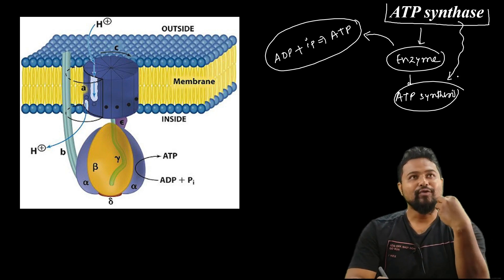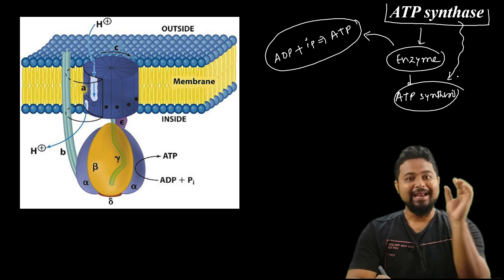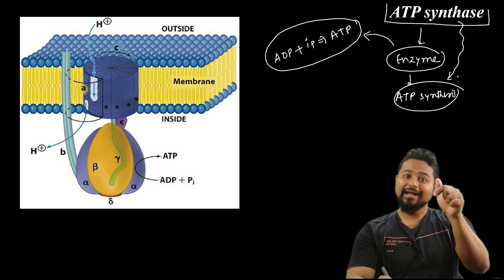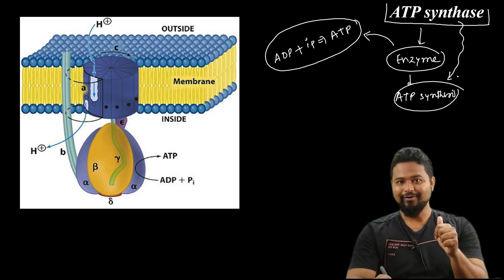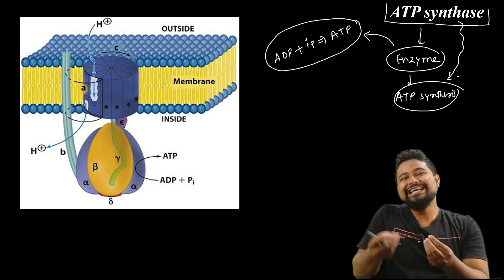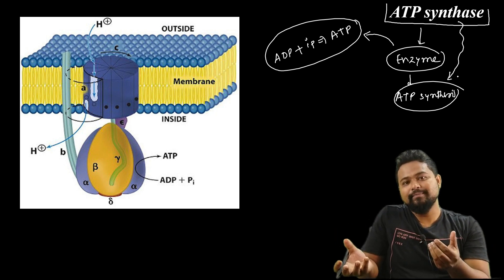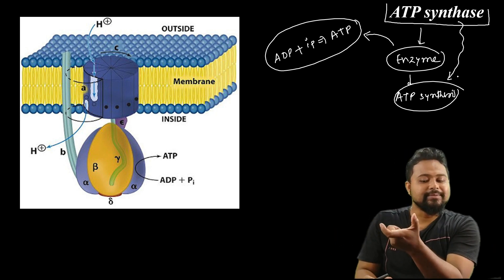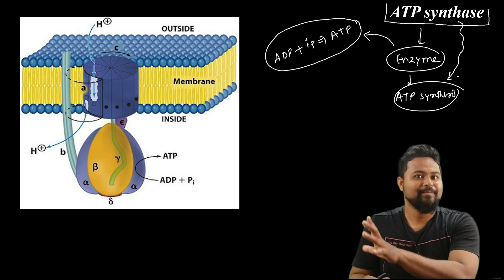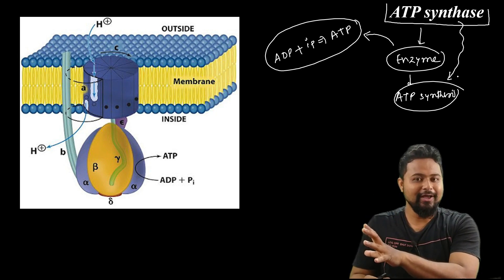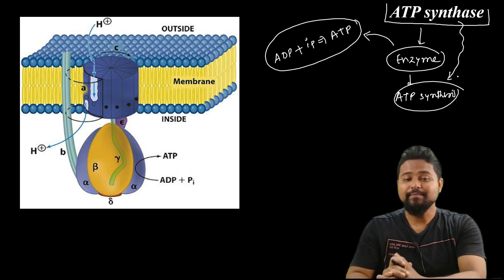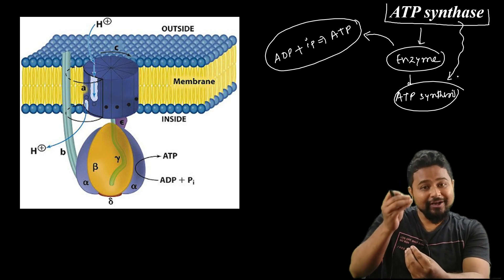There are a lot of enzymes, and enzyme names tell you what they do. For example, alcohol dehydrogenase means it removes hydrogen from alcohol. Phosphorylase means it adds a phosphate group.